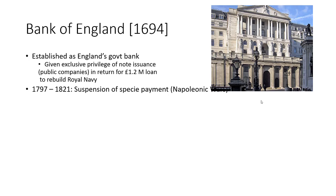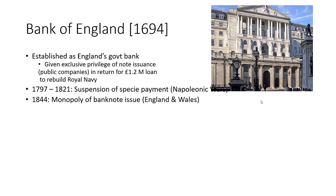The Bank of England suspended its specie payments for a protracted period — about 20-plus years — during the Napoleonic Wars, meaning banknotes were the only form of money; you couldn't redeem them for pound sterling in silver or gold. In 1844 they received the official legal monopoly on banknote issuance for England and Wales. Scotland interestingly had its own free banking system where privately chartered banks could continue to issue notes — an interesting contrast between the monopolized central banking system of England and Wales versus the free banking system of Scotland, which continued for several more decades.